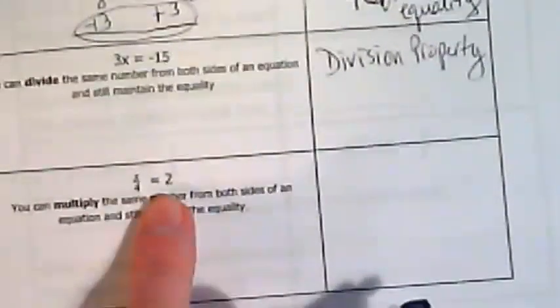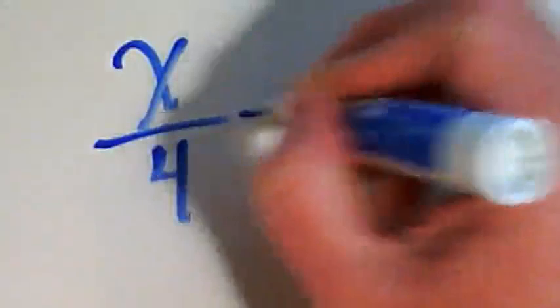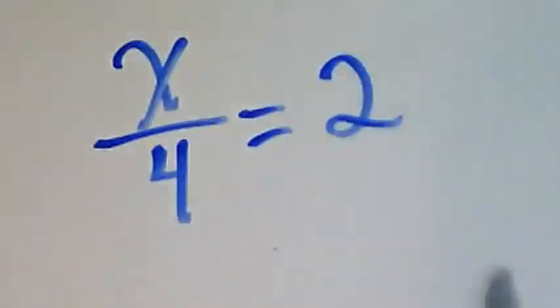Our last example is x divided by 4 is equal to 2. x divided by 4 is equal to 2.